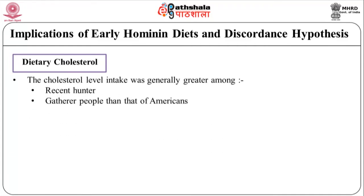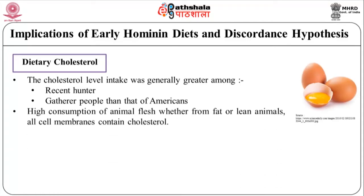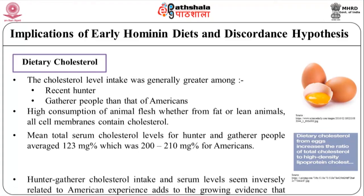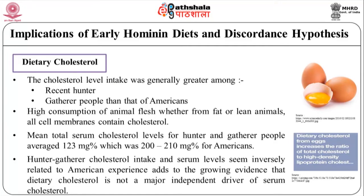Regarding dietary cholesterol: cholesterol intake was generally greater among recent hunter-gatherer peoples than among Americans, because of high consumption of animal flesh — whether from fat or lean animals — as all cell membranes contain cholesterol. Nevertheless, mean total serum cholesterol levels for hunter-gatherer people averaged 123 mg%, compared to 200–210 mg% for Americans. Hunter-gatherer cholesterol intake and serum levels seem inversely related to American experience, adding to the growing evidence that dietary cholesterol is not a major independent driver of serum cholesterol.